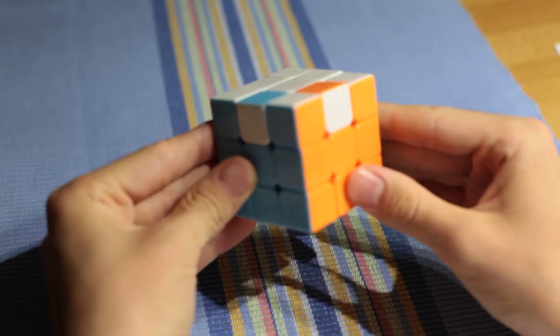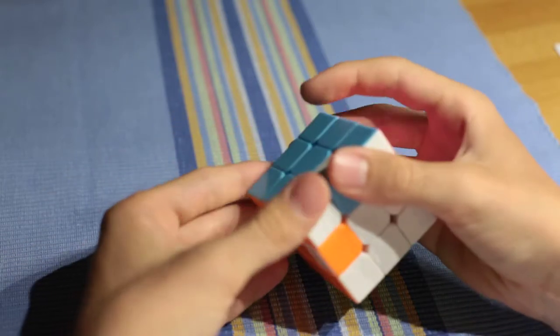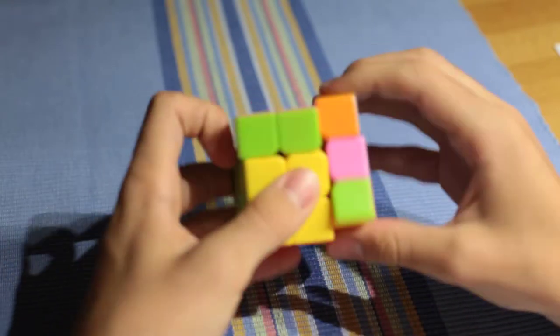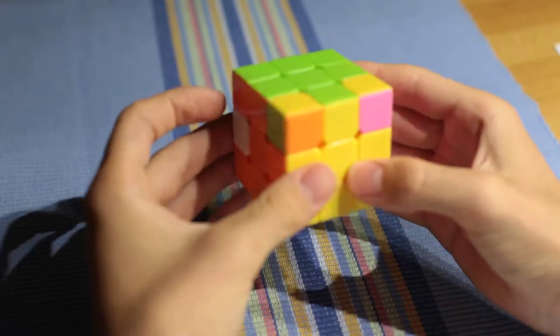They also clench together the corner pieces, which have three colors and can be rotated in three ways. If one is rotated to the right, then another must be rotated to the left.